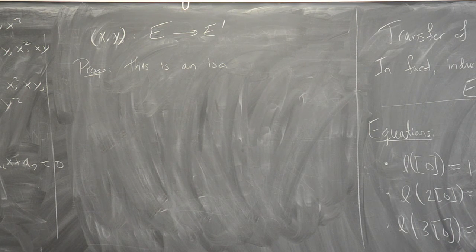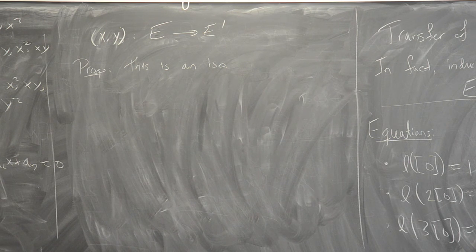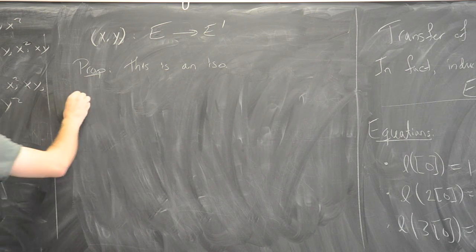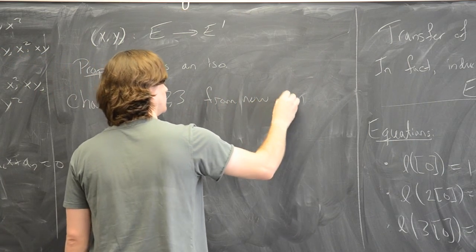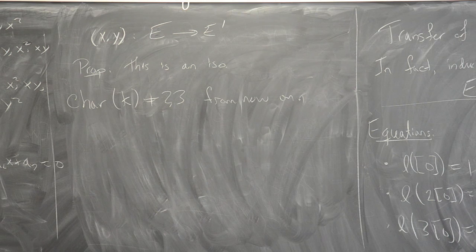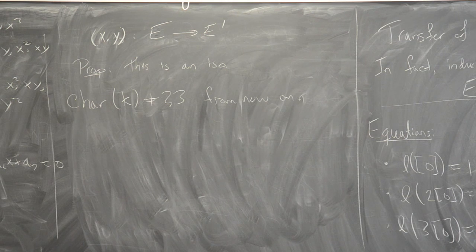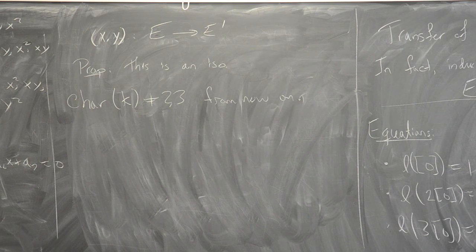I'll call that equation E_{a,b}. We've just shown that every elliptic curve — under the assumption that the characteristic is not 2 or 3 — is isomorphic to one of these E_{a,b}'s. There are isomorphisms between different E_{a,b}'s: if you make the change of variables y = u^{-3} y₁ and x = u^{-2} x₁, you find that E_{a,b} is isomorphic to E_{u⁴a, u⁶b} for any non-zero u in the base field. In fact these are the only isomorphisms.